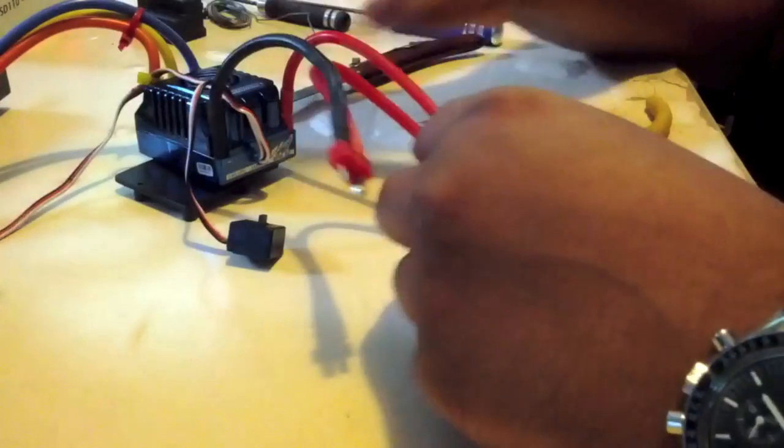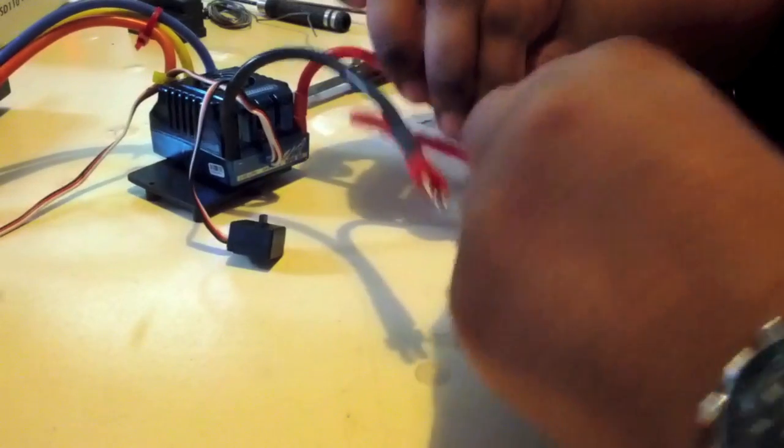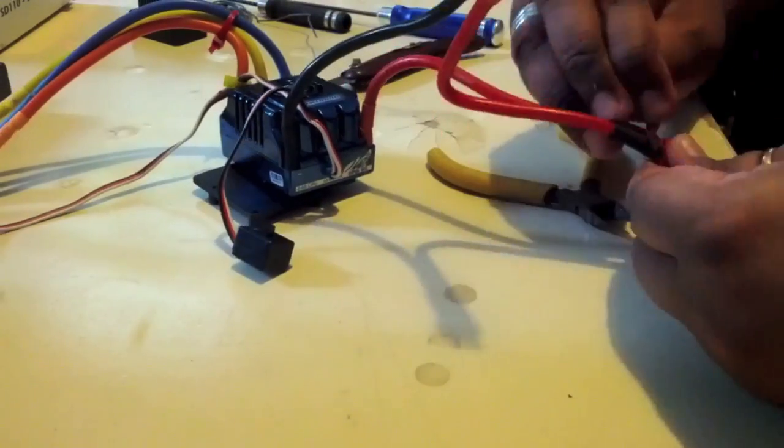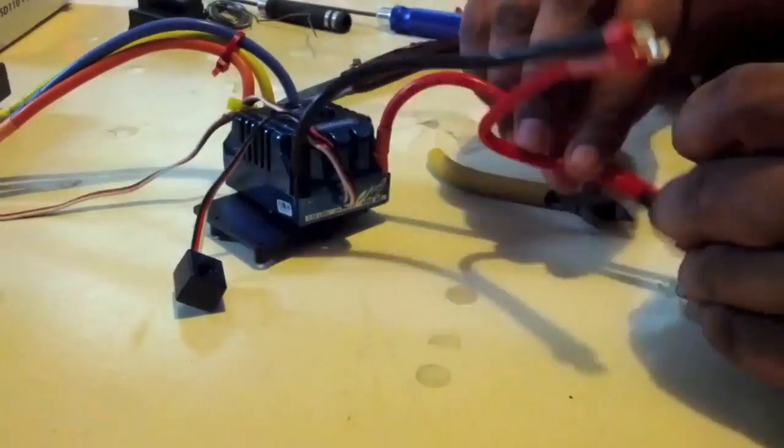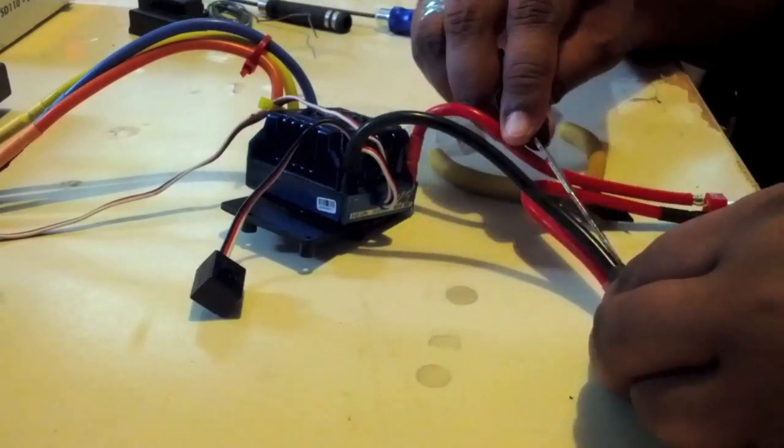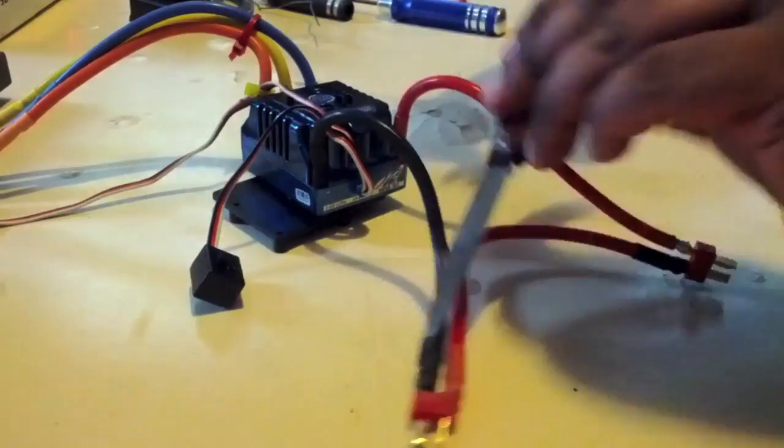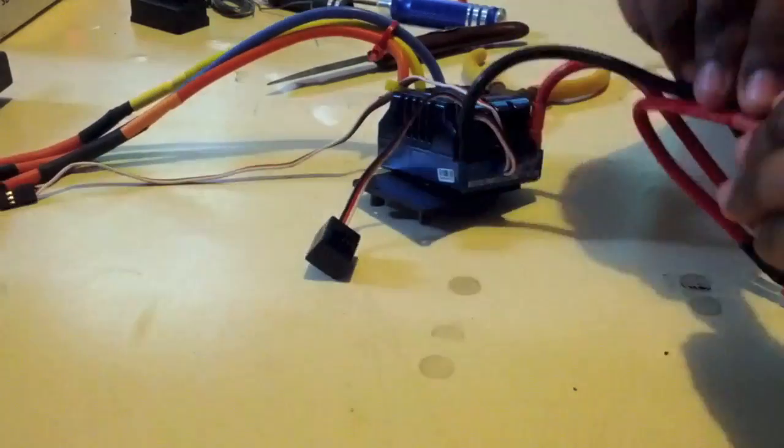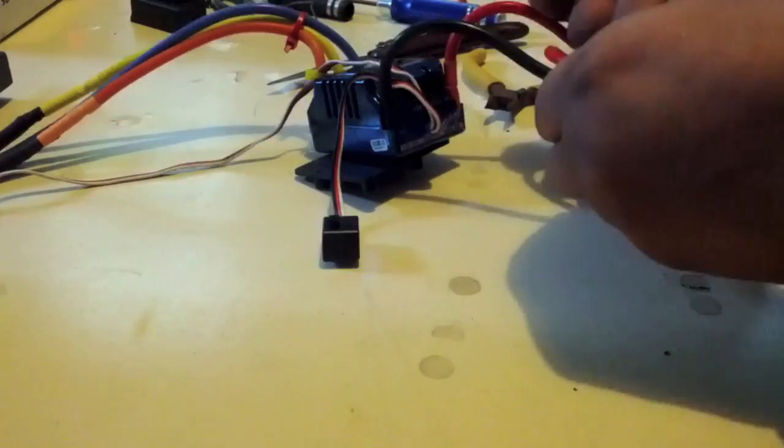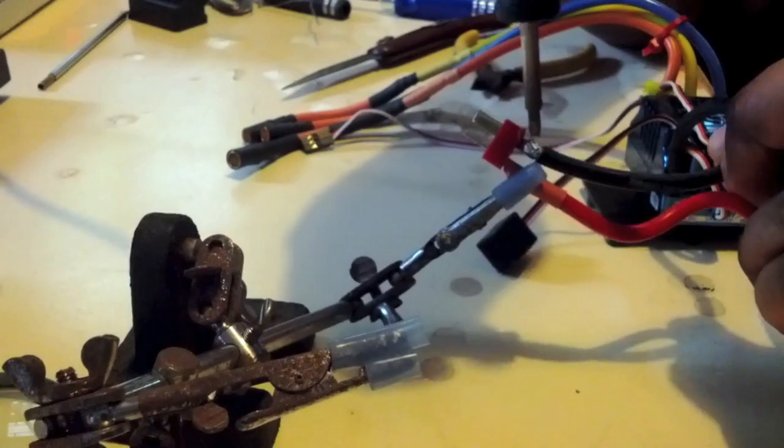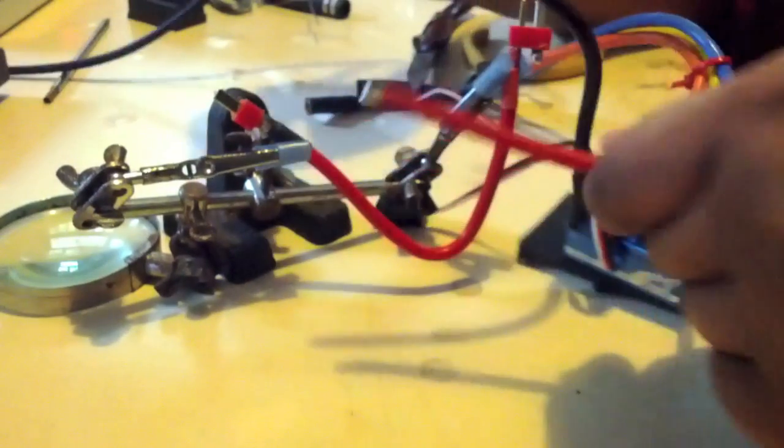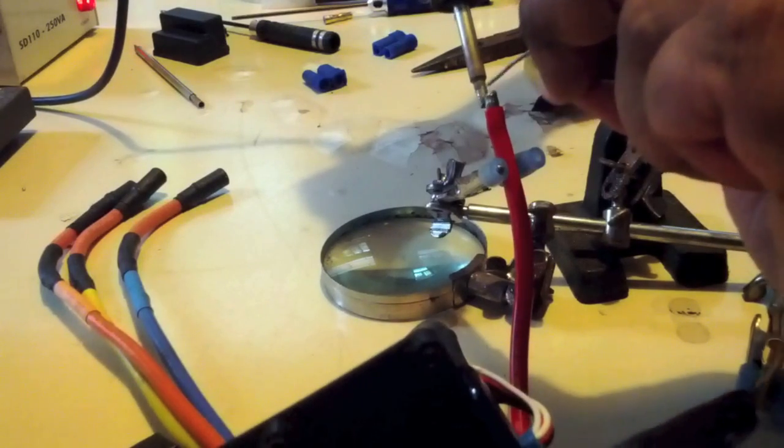To start off, I'm going to remove the serial connection between the DEANS connectors. I can save this DEANS cable for use on another RC, so I'm simply taking the heat shrink off to get better access to the leads themselves, that way you don't have to cut the connectors off.